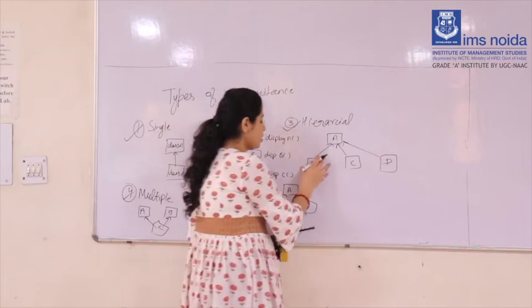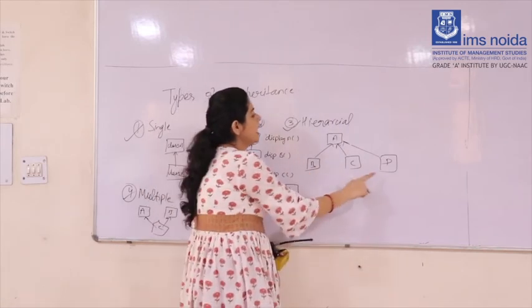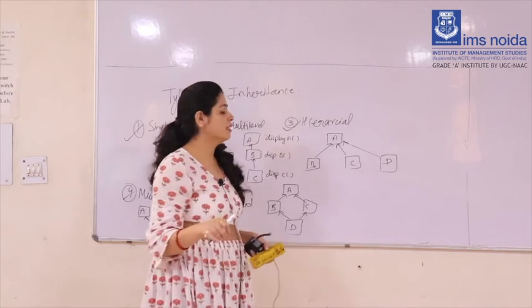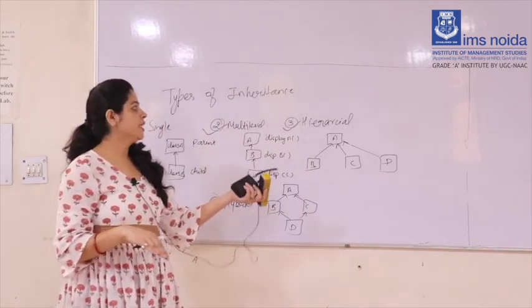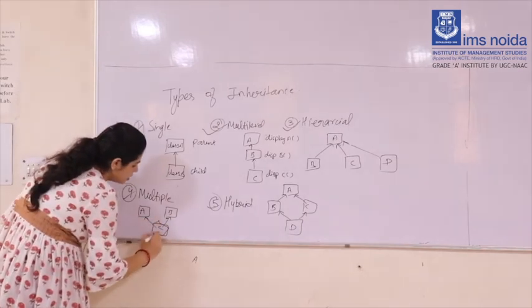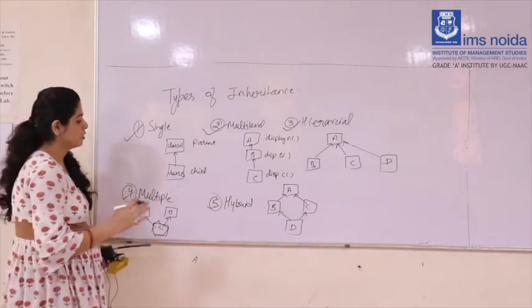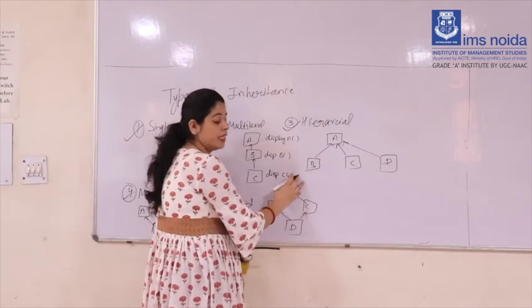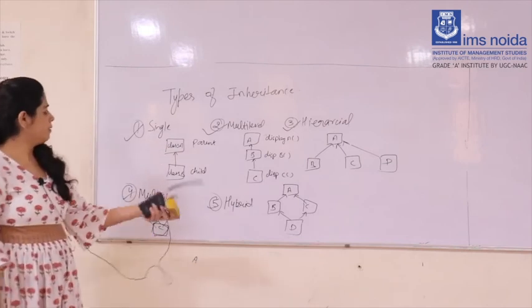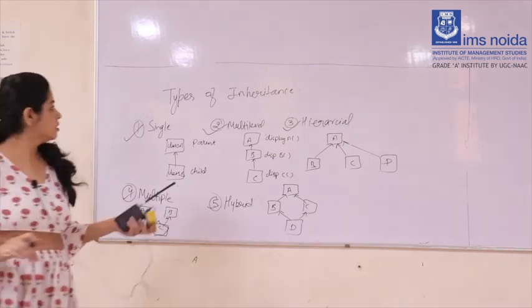In hierarchical inheritance, B, C, and D are child classes accessing all properties from the parent class A, but there is no connection between B, C, and D — they cannot access each other's properties. In multiple inheritance, class C accesses properties from both classes A and B, meaning it has two parent classes. In hybrid inheritance, B and C access properties from A, and another class D accesses properties from both B and C. Multiple and hybrid inheritance are not directly supported in Java. That's all for inheritance — thank you.